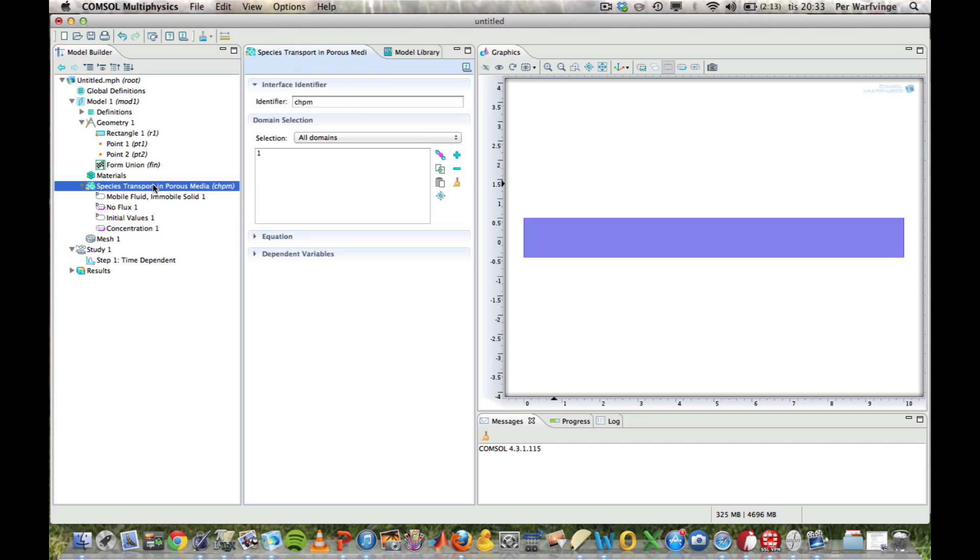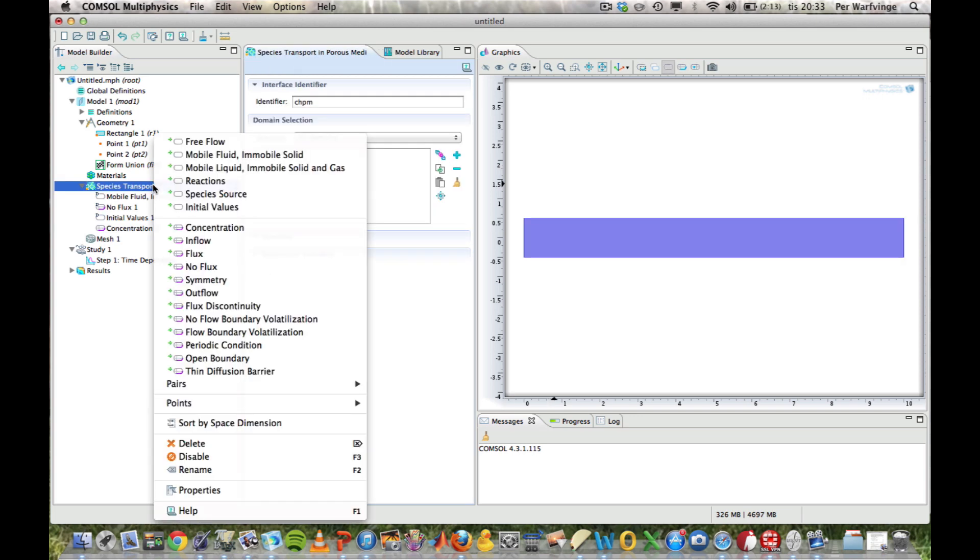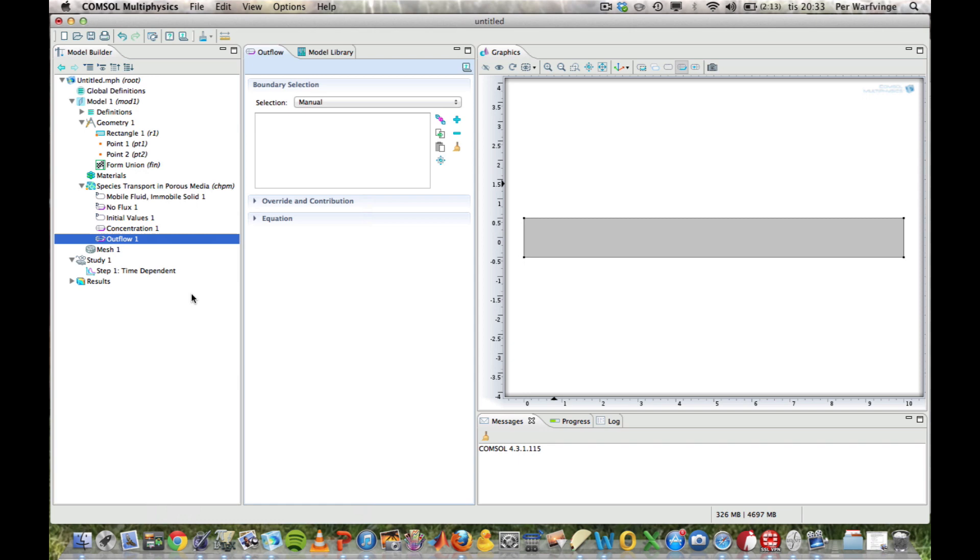Then I need to say something about this boundary over here. So I put the cursor right there. Species transport in porous media. I right click. And there we just want an outflow. We just want the water to come out. So it's right there. That's where we have the outflow.